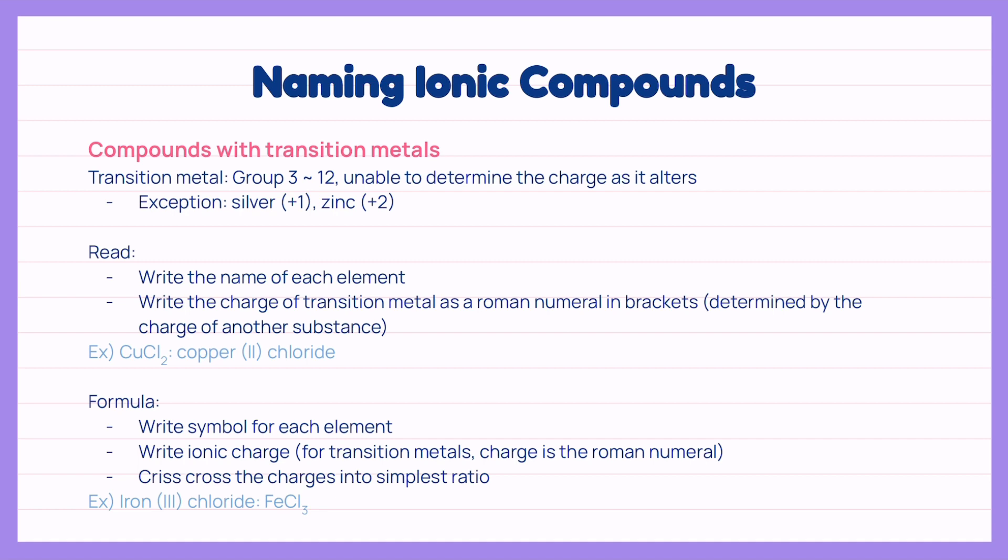The charge of copper is unknown as it is a transition metal and the charge of chloride is negative 1. We would write it like this, the form before we crisscross the charges. If we crisscross the charges, it becomes CuClx and when we compare this to CuCl2, we can find out that the charge of copper is equal to 2. We put this number as the roman numeral and it will look like this, copper chloride.